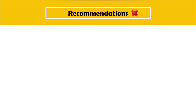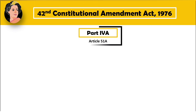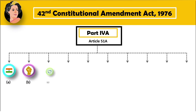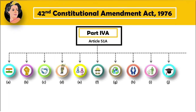After analysing all the recommendations, the Congress government at Centre passed the 42nd Constitutional Amendment Act in 1976. This amendment added a new part, i.e. Part 4A, to the Indian Constitution. This part contained only one article, i.e. Article 51A, in which a total of 10 fundamental duties were inserted. Initially 10 fundamental duties were added, but in the year 2002, when the 86th Constitutional Amendment Act was passed, one more duty was added to the list.